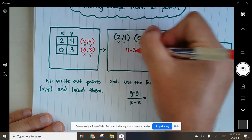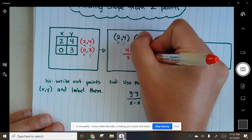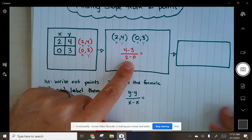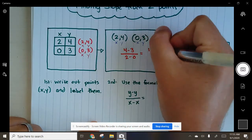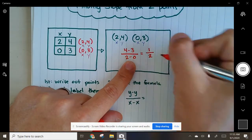4 minus 3, 2 minus 0. 4 minus 3, 2 minus 0. 4 minus 3 is 1, 2 minus 0 is 2.